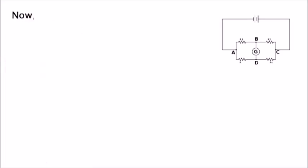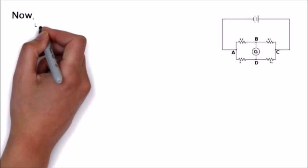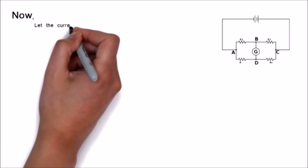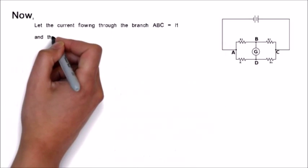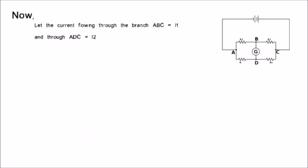Now, let the current flowing through the branch ABC equals I1 and through ADC equals I2.